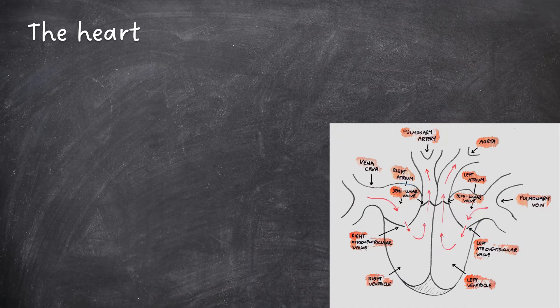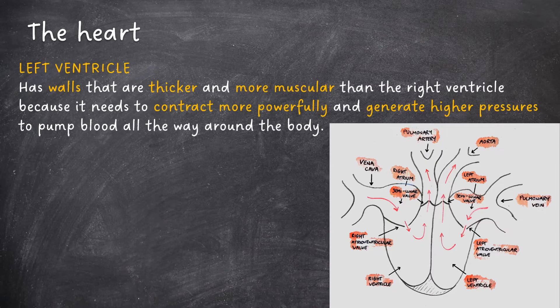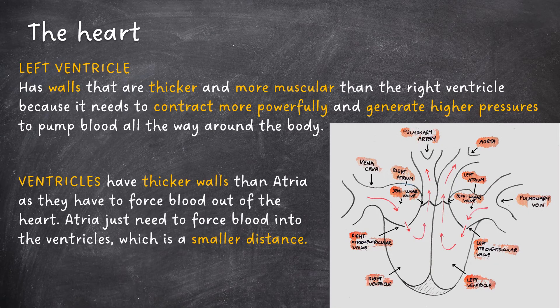The left ventricle has walls that are thicker and more muscular than the right ventricle, because it needs to contract more powerfully and generate higher pressures to pump blood all the way around the body. The ventricles have thicker walls than the atria as they have to force blood out of the heart, whereas atria just need to force blood into the ventricles, which is a smaller distance.